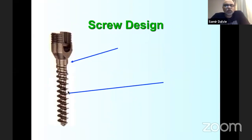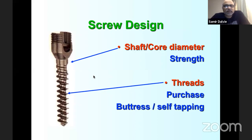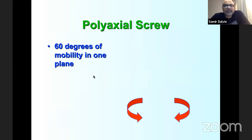Screws have become standardized with shaft diameter and core diameter determining strength, and thread diameter determining pullout strength. Thread types vary by company — variable threads, cortical-cancellous combinations, taper core, and buttress threads that resist backout. Each has pros and cons; a conical shaft is strong but loosens if it backs out even slightly. The variety of thread types indicates no single design is perfect. Polyaxial screws became critical, allowing 60 degrees of mobility to align rods and screws in angulated constructs.